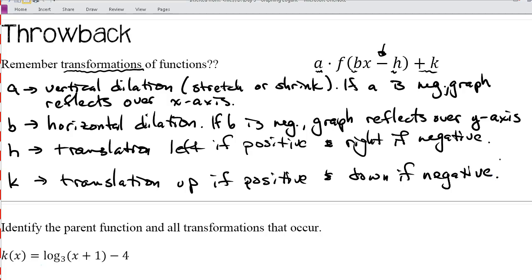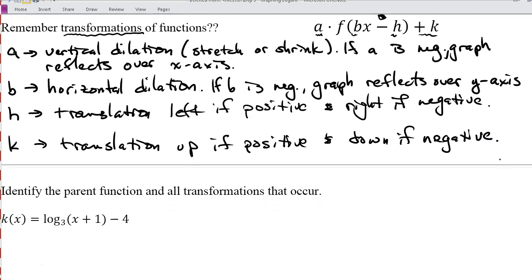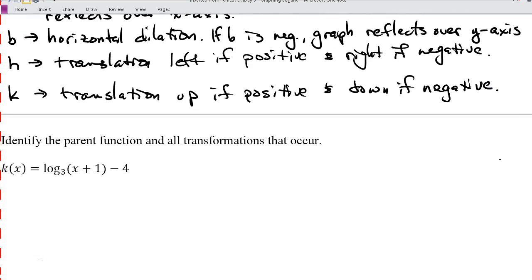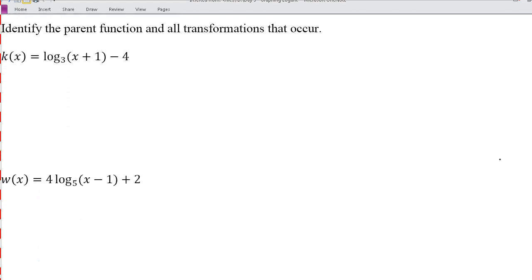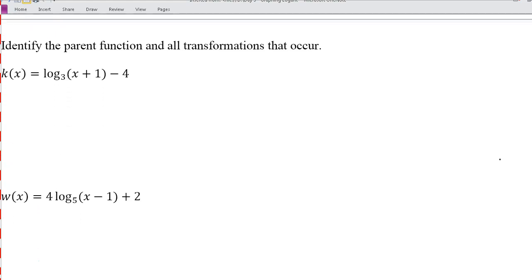Let's take a look at some examples and see how these translations work. We've talked a little bit about parent functions, so let's look at this first one. We've got k(x) = log₃(x + 1) - 4. So my parent function